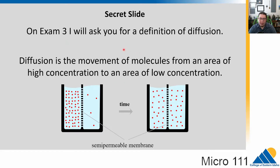Before we do that, I wanted to put in a secret slide to reward those who are watching the videos. On exam 3, I will ask you again for a definition of diffusion — I will ask you to write this out. Diffusion is the movement of molecules from an area of high concentration to an area of low concentration. We're going to see this in action in the next step of respiration.